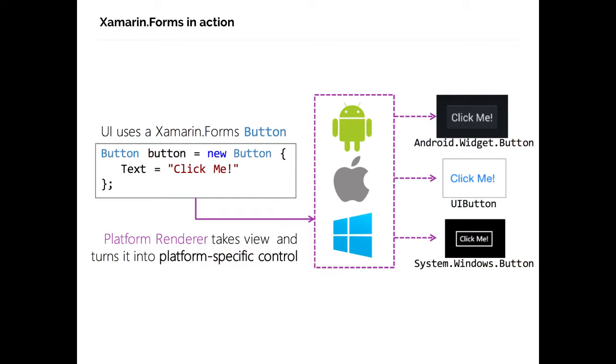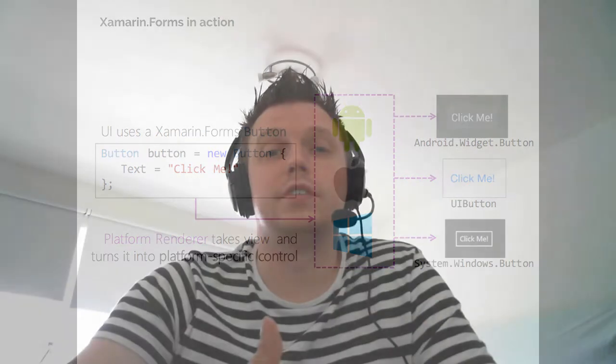So that's how the magic works under the hood for Xamarin.Forms, and of course you can hook into that yourself to create a more native look or access some more native properties. In this episode we're going to look at how to do that.